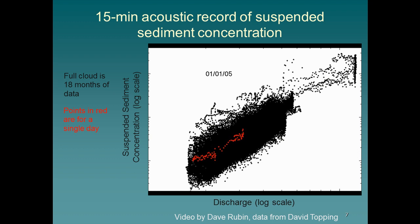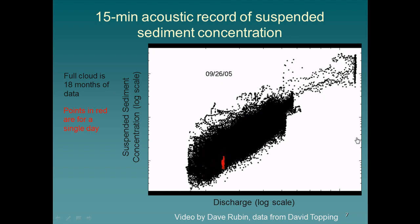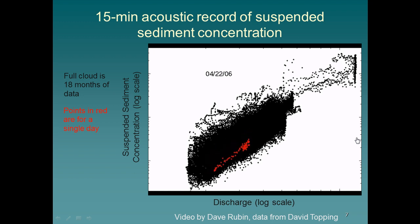Discharge on a log scale and suspended sediment concentration on a log scale — this is a cloud of data from 18 months, with red showing one day of data. To give you an idea of the variability in sediment flux in this system: even for a given discharge, we can see ranging over at least one to two orders of magnitude, contingent on inputs from tributaries. The sediment concentration-discharge rating curve is very unstable. This again requires real-time monitoring to ensure that when floods are moved down the system, there's sufficient sediment available.